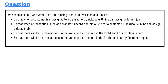The answer options are: so that when a customer isn't assigned to a transaction, QuickBooks Online can assign a default job; and so that when a transaction doesn't contain a field for a customer, QuickBooks Online can assign a default job; and so that there will be no transaction at the specified column in the profit and loss by class report.